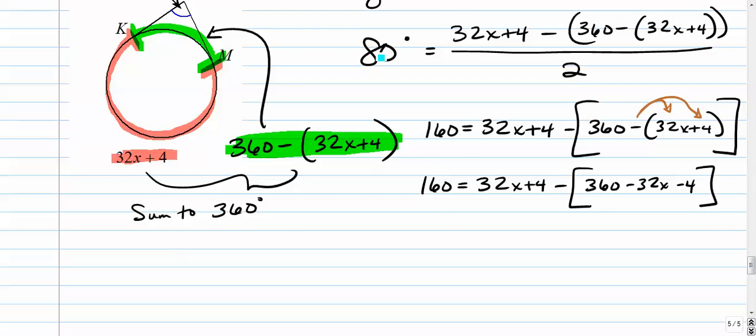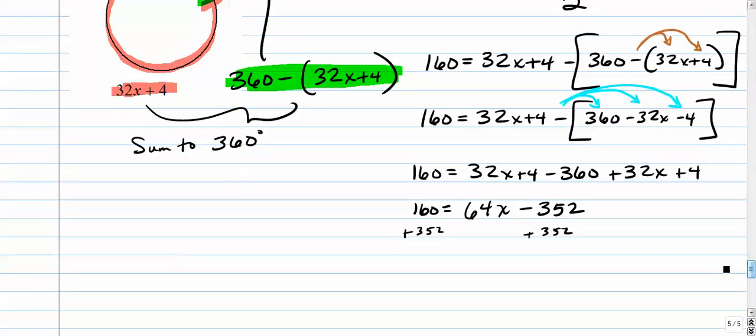Alright, now we have to do another set of, another round of distributive property. So we go 160 equals 32x plus 4 minus 360 plus 32x plus 4. So it's really a double set of distributive in brown and in blue. Now all we do is combine like terms. 32x and 32x is 64x. 4 plus 4 is 8. Minus 360 is negative 352. Alright, let's add that to both sides. We add 352 to both sides. And we go, oh gosh, 512 I think. 512 equals 64x.